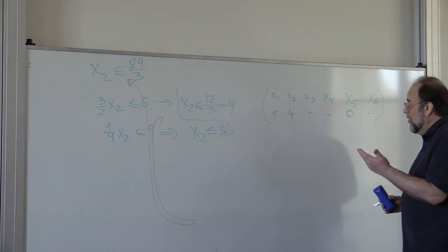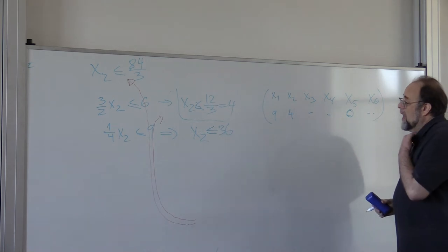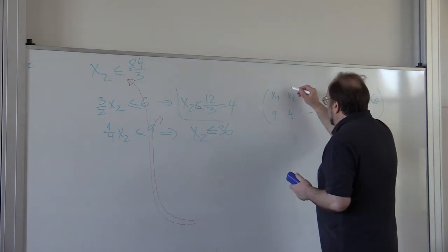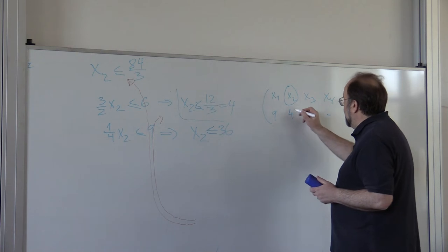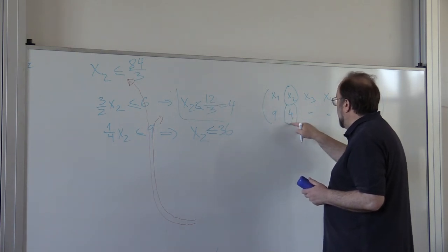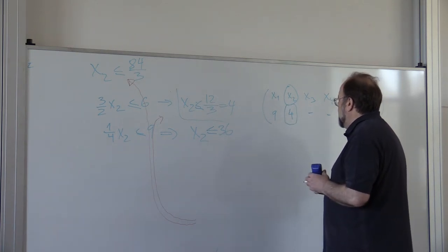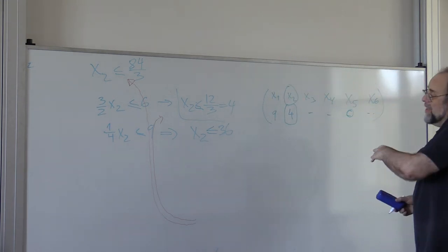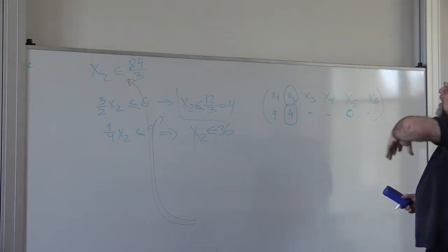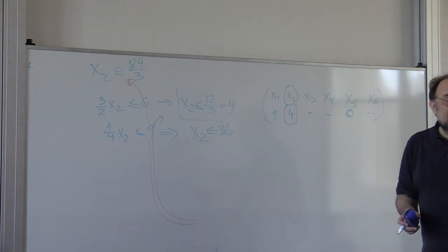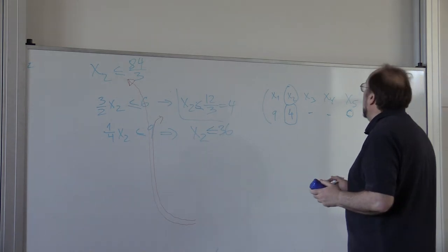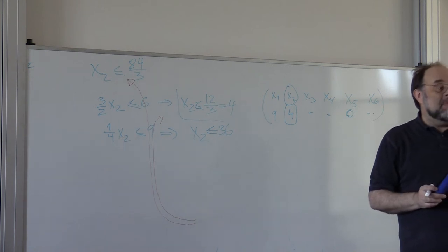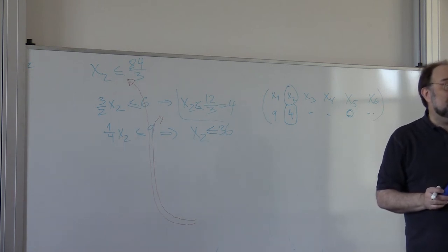And whatever is x6. And so now what you do is, because x2 cannot exceed 4, it becomes useless. So from here, we will solve for x2 and eliminate it again from the objective and the constraints.